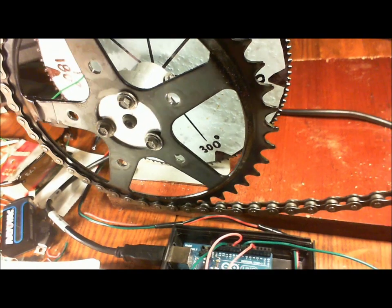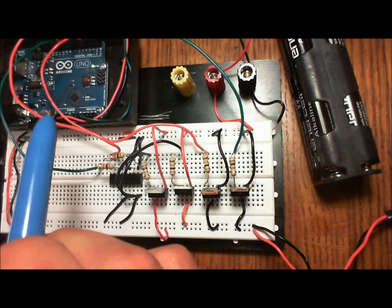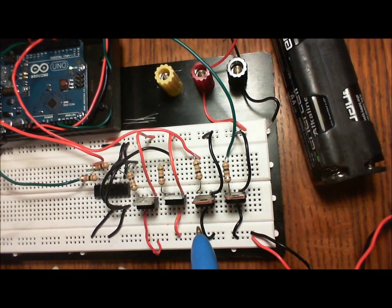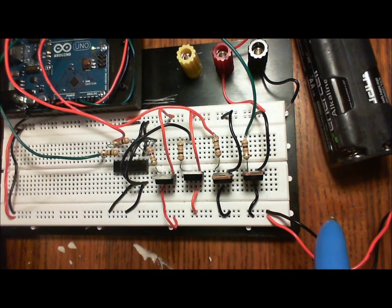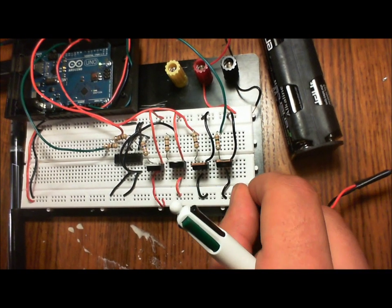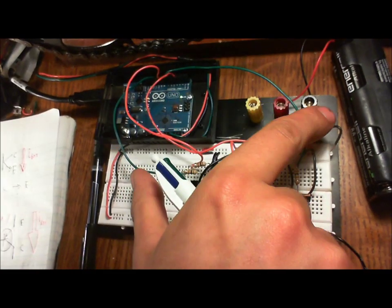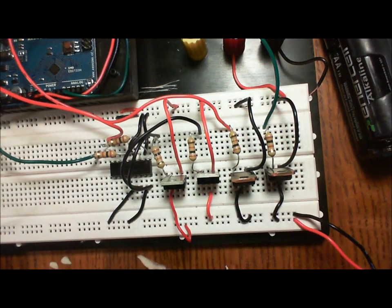But anyways, getting back to this H-bridge circuit, we have about 11.3 volts there. And if we want to drive the motor one way, we have to turn on, let's say these two green ones are turned on. So we're getting 5 volts from the Arduino, 20 milliamps.